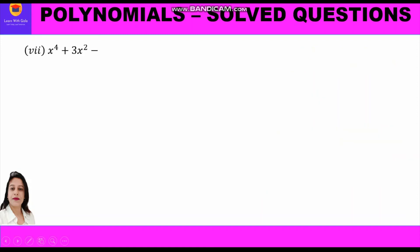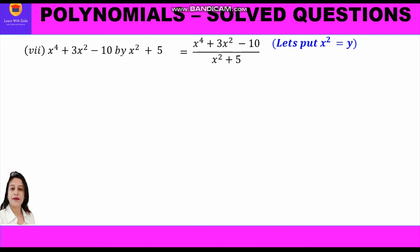Question number 7: divide x to the power 4 plus 3x squared minus 10 by x squared plus 5. We write in fraction form: (x⁴ + 3x² − 10) upon (x² + 5). We factorize the numerator, but since the power of x is 4, we cannot apply the algebraic identity directly — we must first convert it into a quadratic expression.